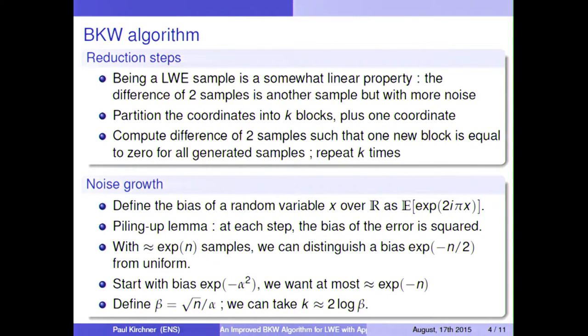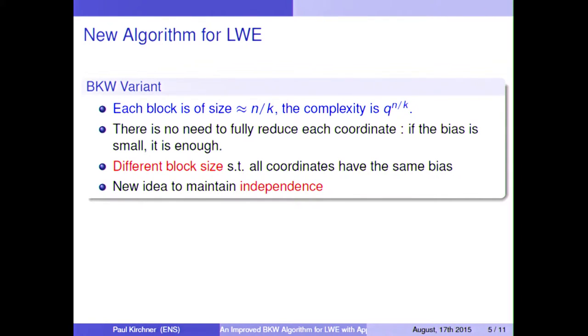If we start with a Gaussian of standard deviation which is alpha times q, then at the beginning we have the bias which is exponential of minus alpha squared, and we want to end up with almost exponential of minus n. And so if we define beta as square root of n divided by alpha, we can take the number of blocks, which is k, as almost 2 log beta. And therefore, each block is of size n over k. And so because we want to have a list of samples where you can subtract and remove n over k coordinates, then the complexity is q to the n over k.